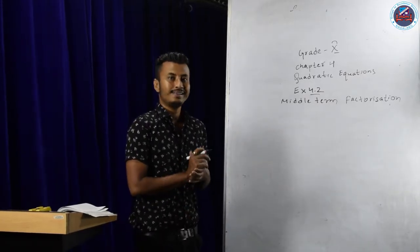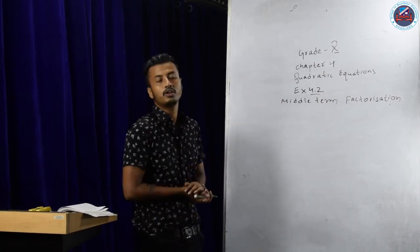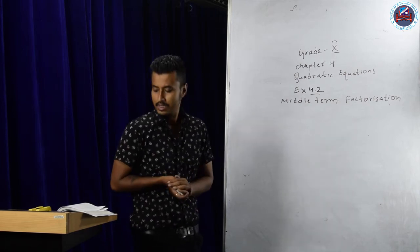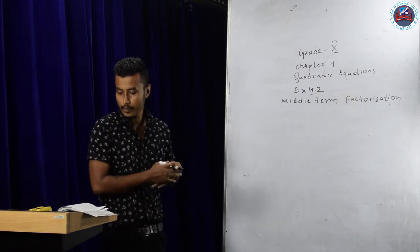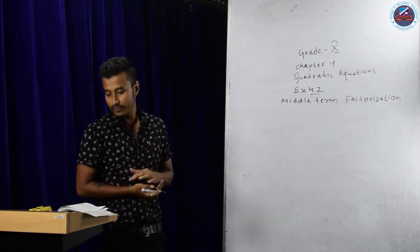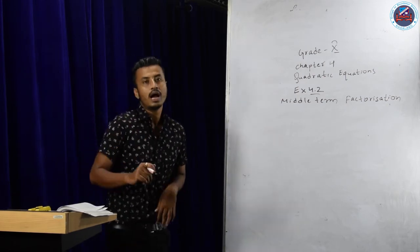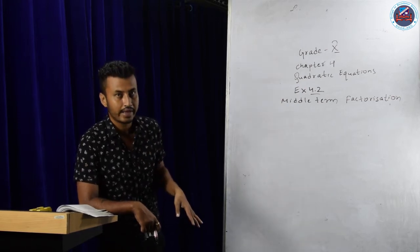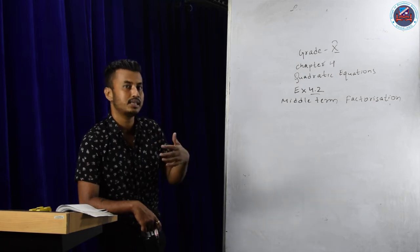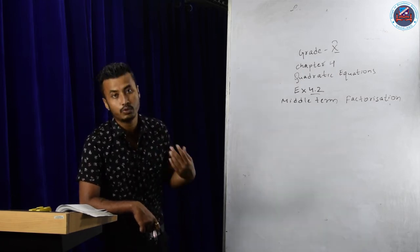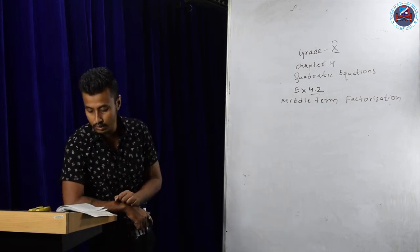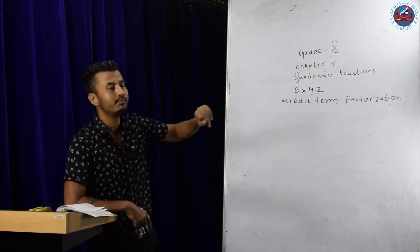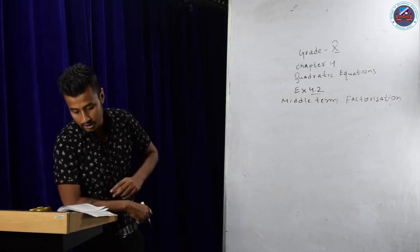Welcome back. Today we are going to start with middle term factorization, which you have already learned in your previous classes, so I won't go deep into this topic. I'll just solve two or three questions. Exercise 4.2, question number 1: find the roots of the following quadratic equation by factorization. Roots and zeros are both the same thing — they are the values of X that satisfy the entire equation.